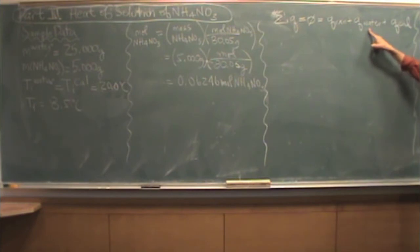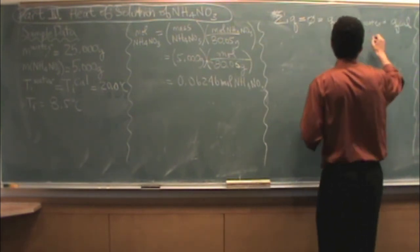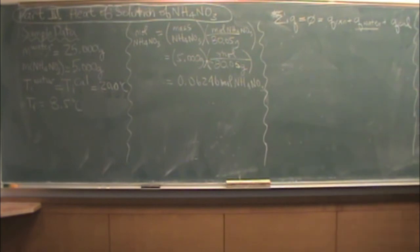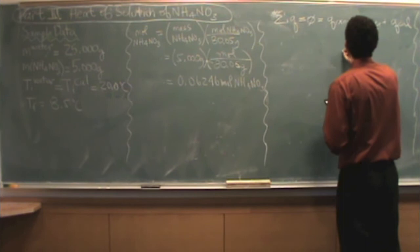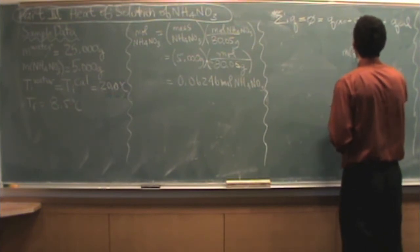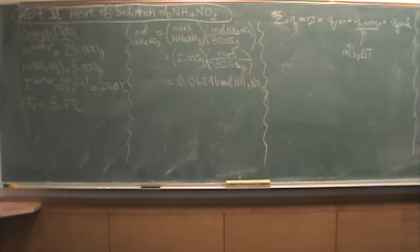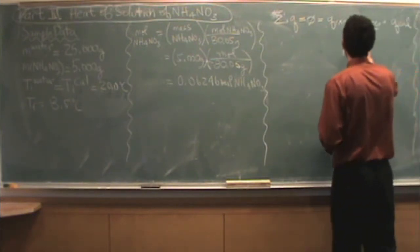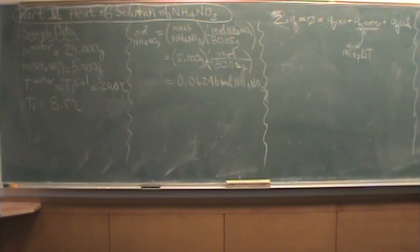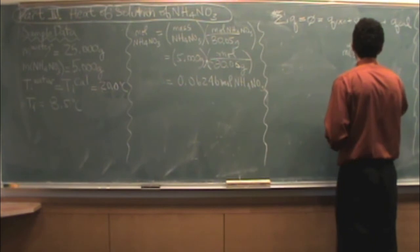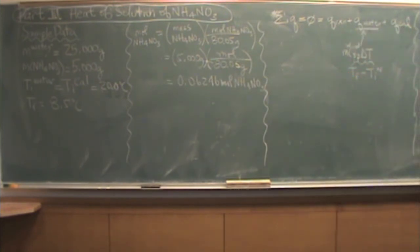So there's Q of reaction plus Q of the water. This is a normal temperature change. In our case, it cooled down from 20 to 8.5. And the calorimeter is the same temperature of the water, so it also cooled down. Let's start with the Q of water. It's going to be MC_SP delta T. The mass is the mass of the water, which we have from before. We also have C_SP, that's going to be 4.184 joules per gram degree C. And then T final minus T initial of the water. T final we already know is 8.5 and T initial was 20 degrees C.